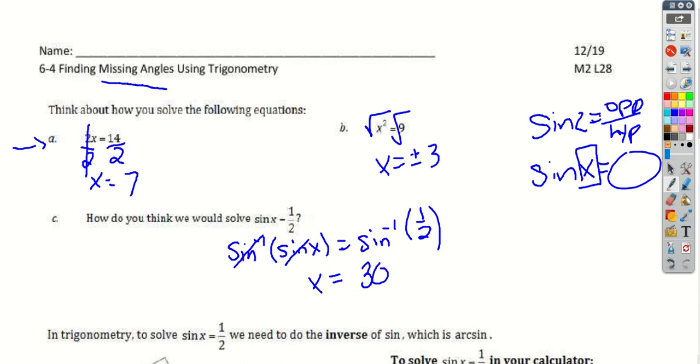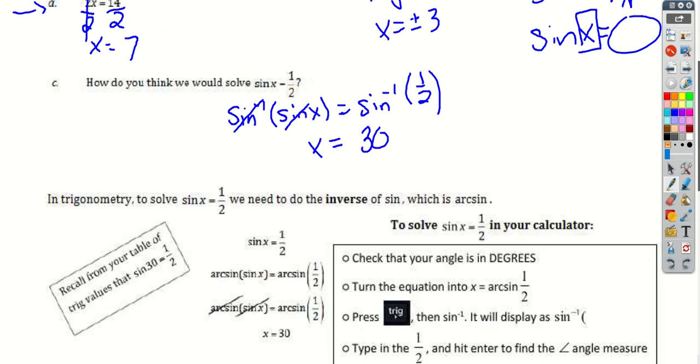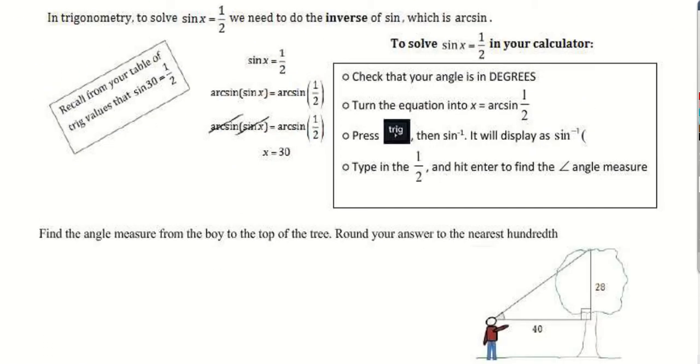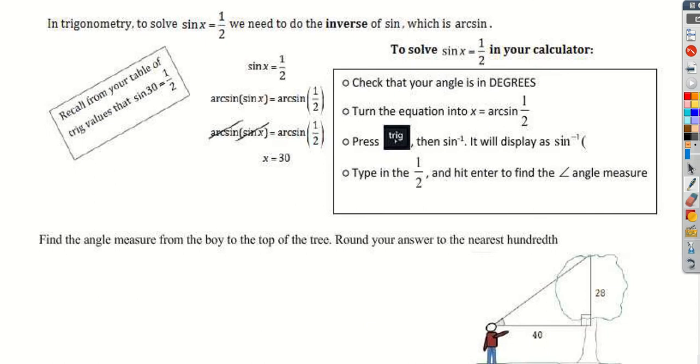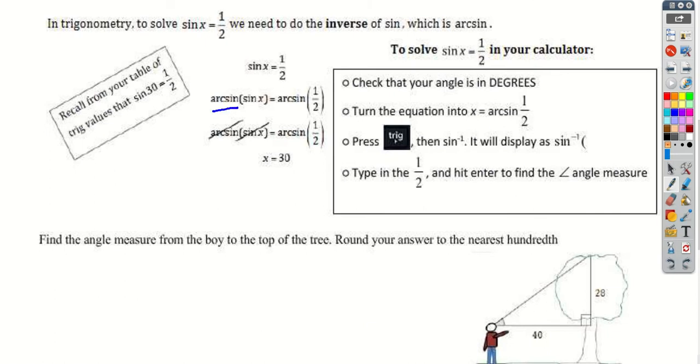That's all we have to do to solve for missing angles, is use the inverse or arc function. Instead of writing the inverse of sine, we said sine to the negative one or sine inverse, we can also use arc sine. Make sure when degrees, turn the equation into x equals arc sine or sine inverse. Then you're going to press trig, enter in that, type in half, and then hit enter to get the angle measure.